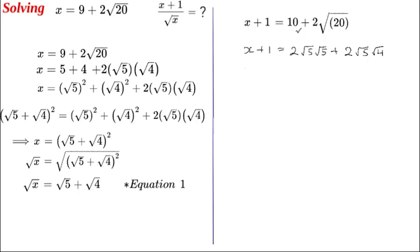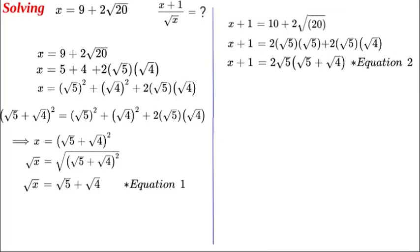We can simplify further by factoring out 2 times the square root of 5, giving us the square root of 5 plus the square root of 4 inside the bracket. So x plus 1 equals 2 times the square root of 5 times the quantity square root of 5 plus square root of 4. We'll denote this as equation 2, alongside equation 1.